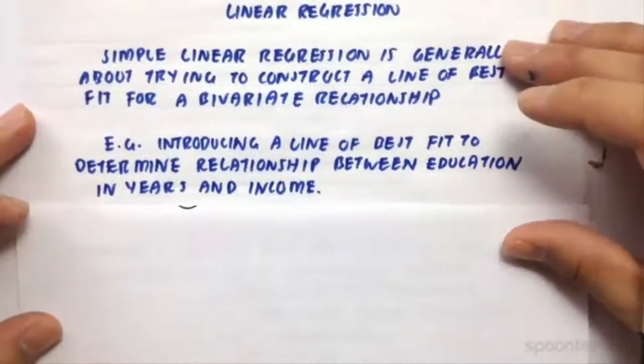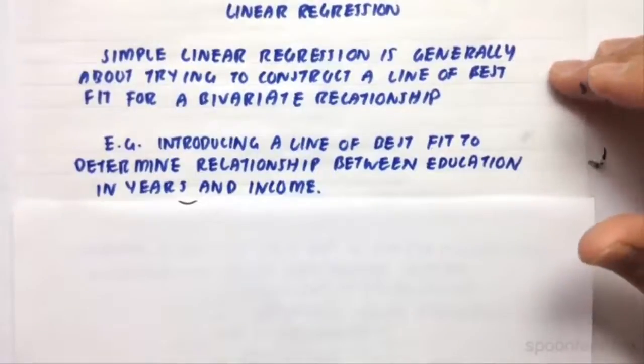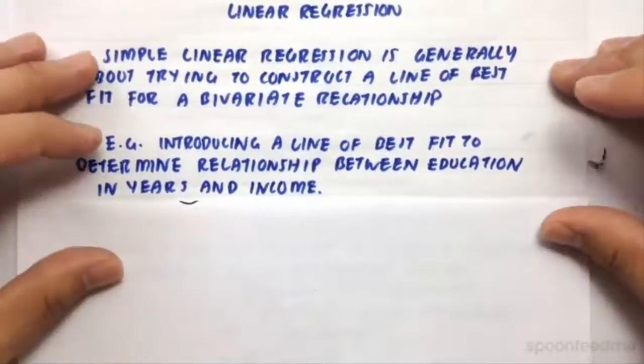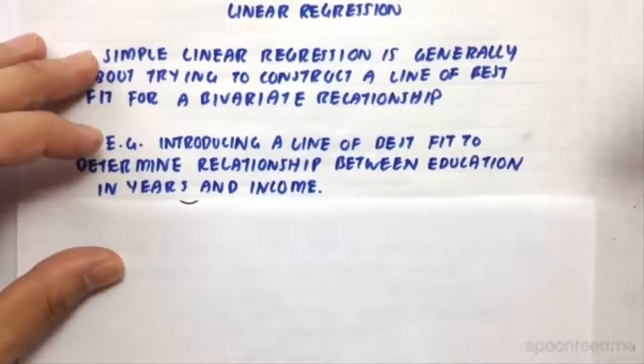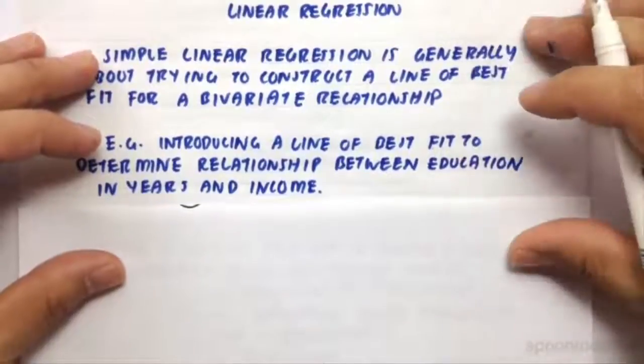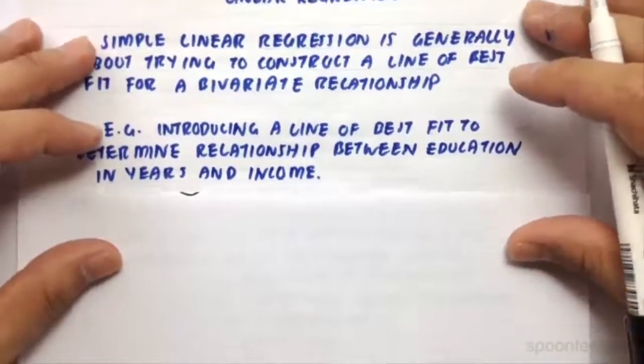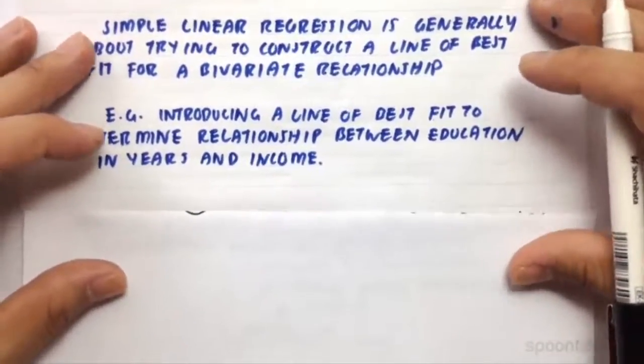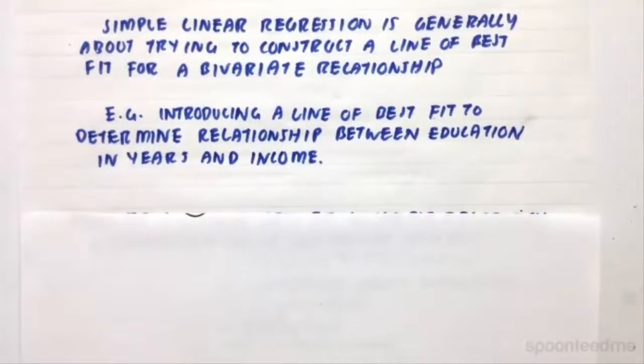So for example, we might use this simple linear regression best fit line to introduce a line of best fit to determine the relationship between education in years and income. So we might want to know if I spend so many more years in uni or more years in high school, how much more income would I receive?